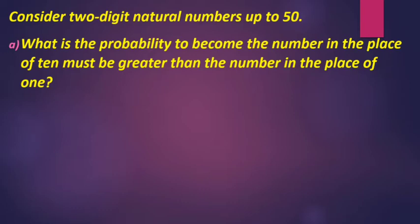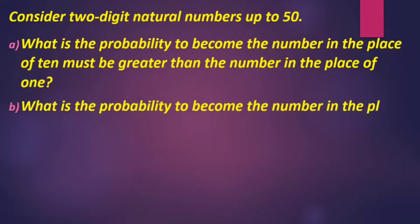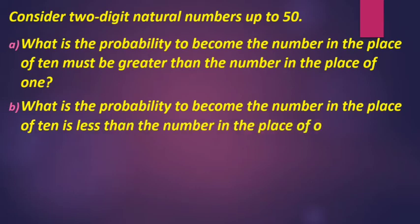We are going to work with 2-digit natural numbers. If we look at 1-digit natural numbers, the number in the tens place would be a 1-digit number. The condition is: the number in the tens place must be greater than the number in the units place. Let's take a look at the examples.